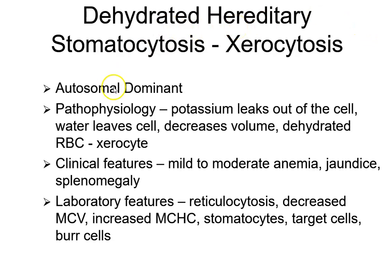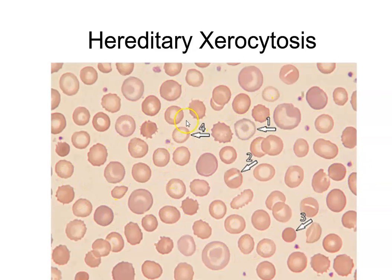Dehydrated stomatocytosis is also autosomal dominant. Here, potassium leaks out of the cell, water follows, decreasing the volume — it becomes dehydrated, which we call a xerocyte. This is the exact opposite of overhydrated stomatocytosis. You're going to get smaller cells, increased MCHC, and you might see some stomatocytes but also target cells and burr cells. The poikilocytosis is out of hand — look at how little some of these cells are.